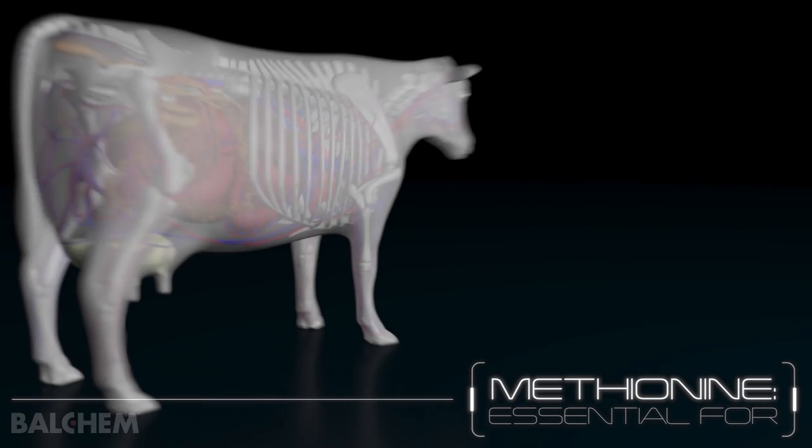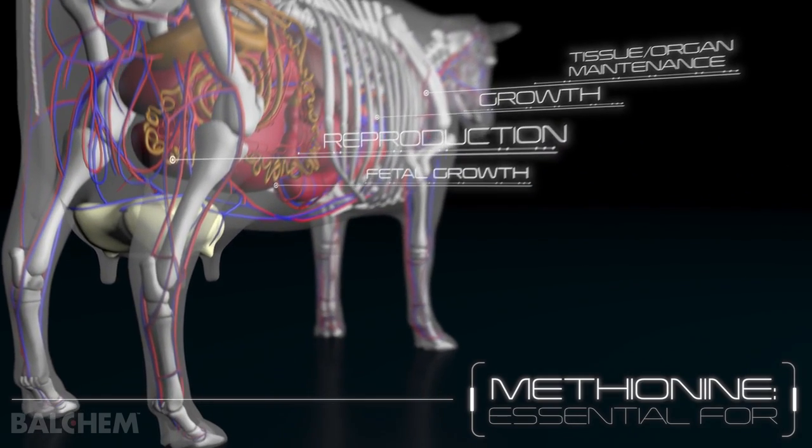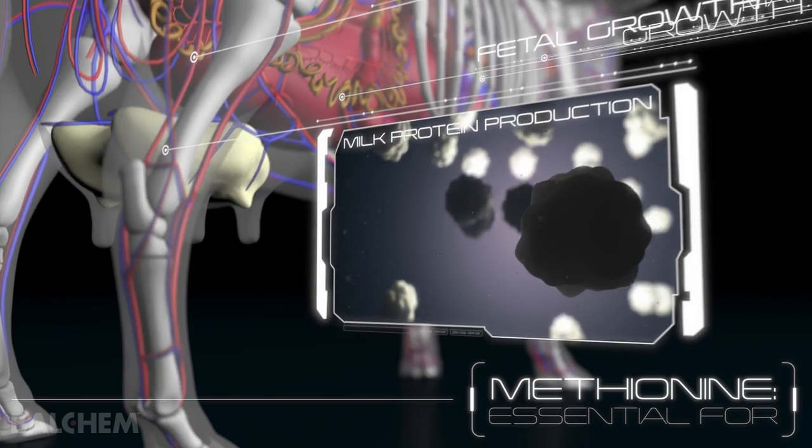In dairy cattle, methionine is essential for tissue and organ maintenance, growth, reproduction, fetal growth, and perhaps most importantly, milk protein production.